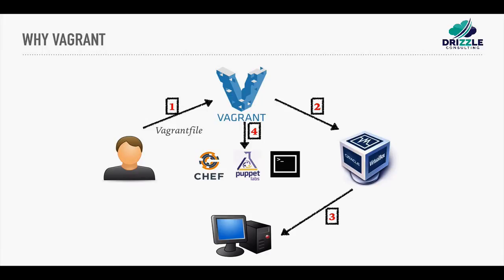Then Vagrant will run a script or several scripts to do provisioning. So once the environment is created — let's say we created a new Linux environment — now we need to install a database and an application server on top of it. You can do this in several ways. Vagrant is capable of running Chef, Puppet, or a shell script, a bash script. In this script you can define all the environment components that you need to get built up on the new operating system.